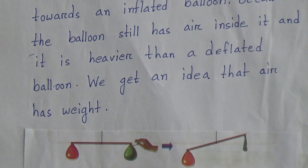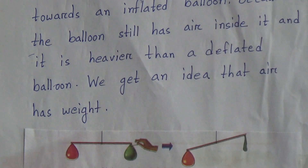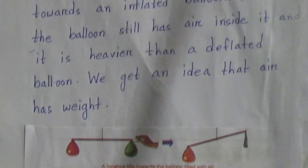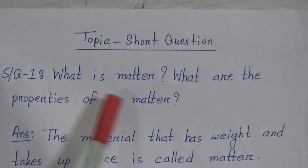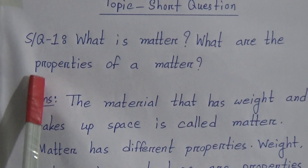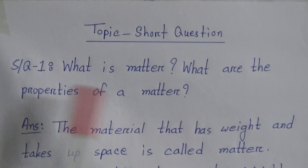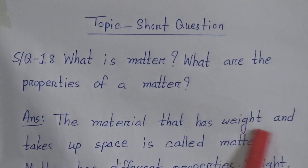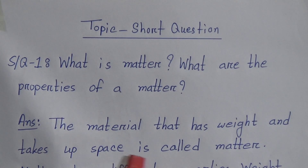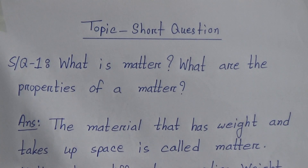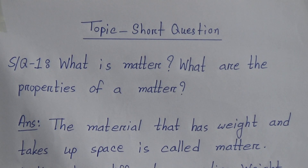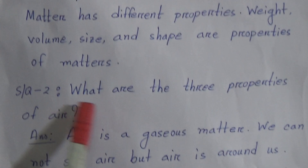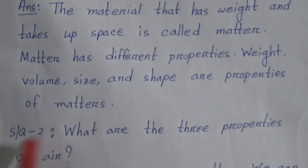I have finished reading this chapter. Now I will give you the short question answers. Short question one: What is matter? What are the properties of matter? Answer: The material that has weight and takes up space is called matter. Matter has different properties — weight, volume, size, and shape are properties of matter.